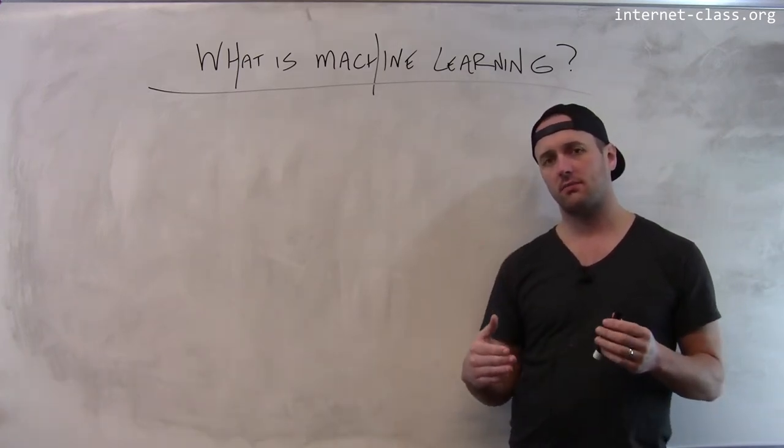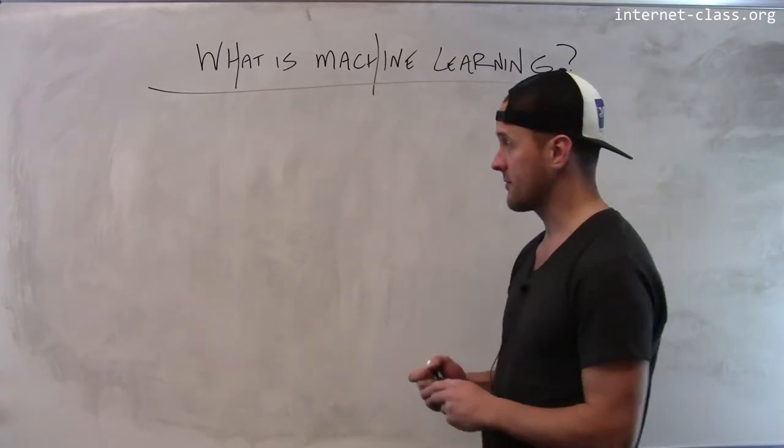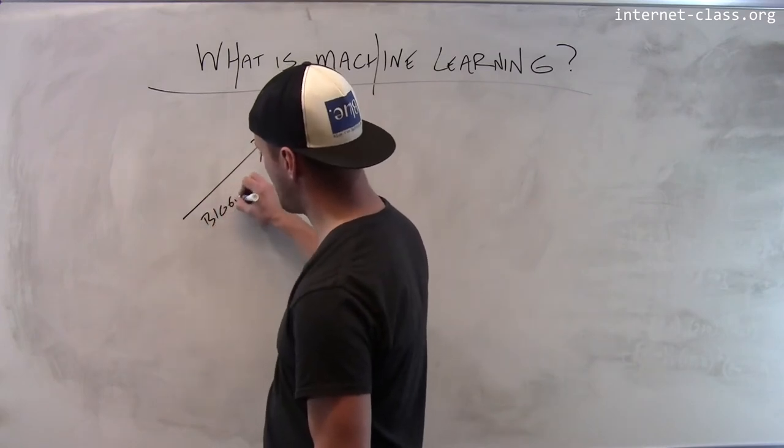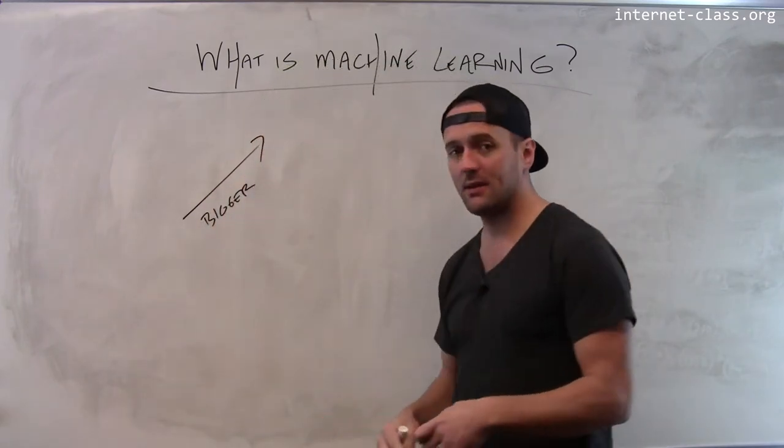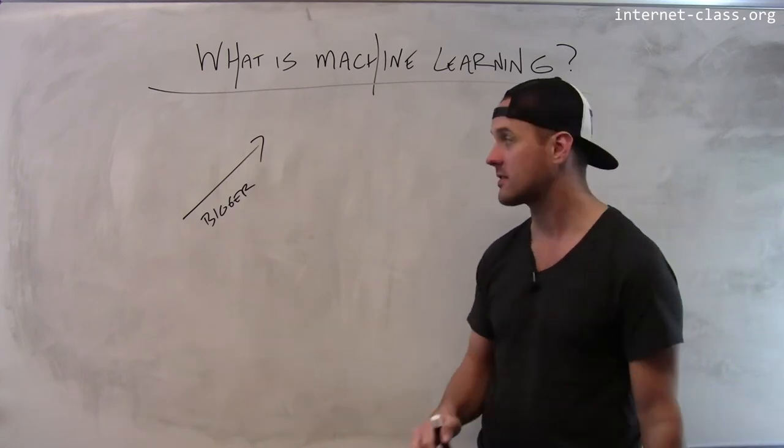I think that machine learning is particularly important to the future of the internet simply because of a couple of trends. First of all, the internet is getting bigger. A bigger internet with more people on it means there's more data online to train machine learning models to make decisions. So that's good.